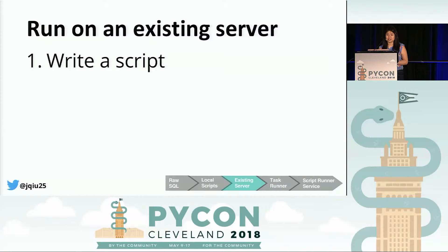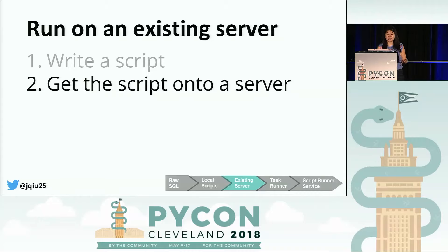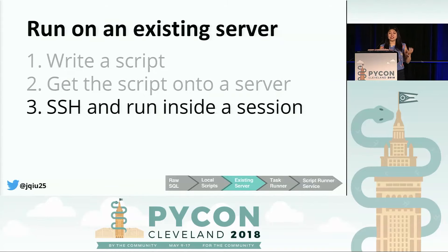I talked to my manager about workaround strategies, and we thought: wouldn't it be nice to have a computer configured like my laptop but on all the time? We have several EC2 instances set up to do just that. So the next strategy is how to run scripts on an existing server. Similar to running scripts locally, you start by writing the migration script. Because we're now running on a server, you need to get the script onto the server — you could deploy a copy of the repository, upload the script, or use SCP to manually copy it.